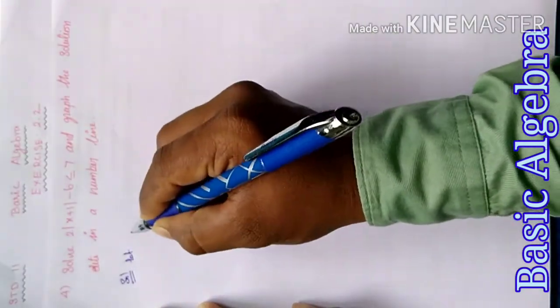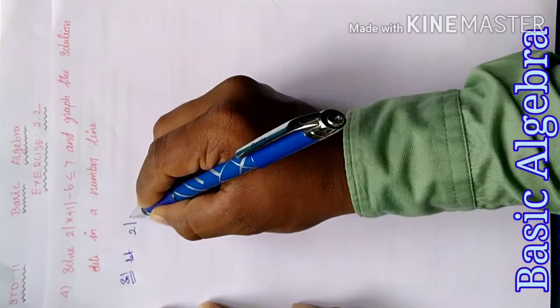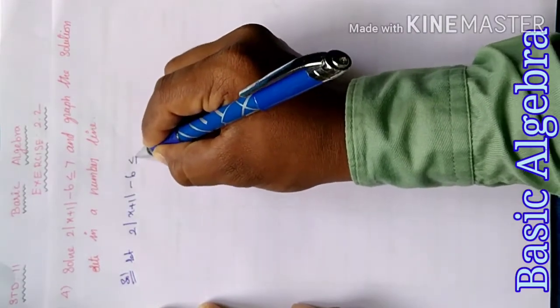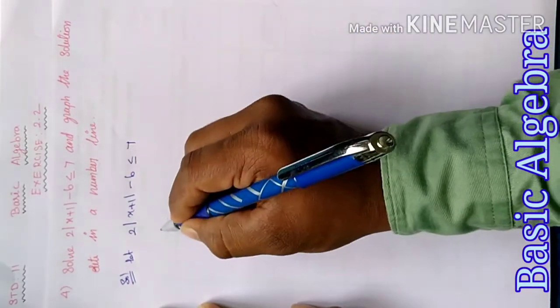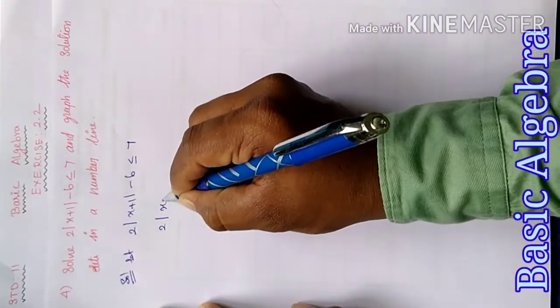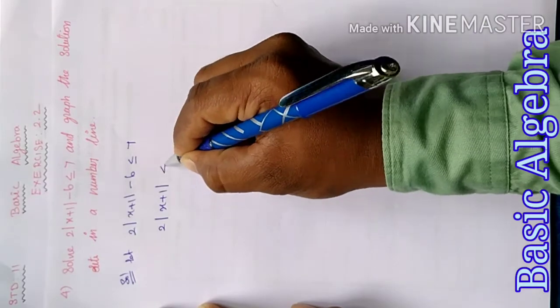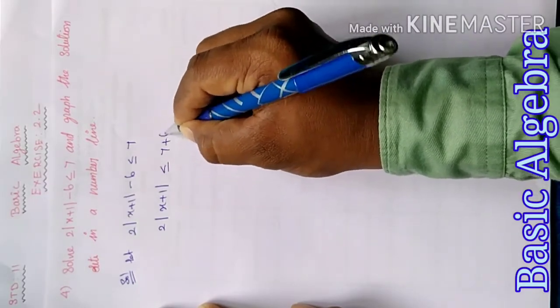Let's solve the question: 2 times modulus of x plus 1 minus 6 less than or equal to 7. First, move the minus 6 to the other side. Therefore, 2 times modulus of x plus 1 less than or equal to 7 plus 6.